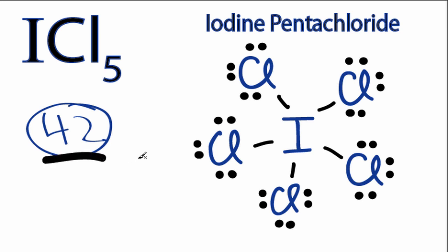But we had 42, so we have 2 extra valence electrons. Since iodine is in period 5 on the periodic table, it can hold more than 8 valence electrons. So let's take the remaining 2 and just put them right here on the iodine.